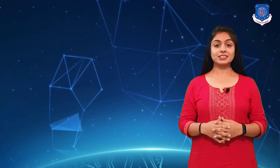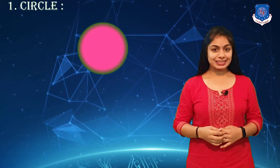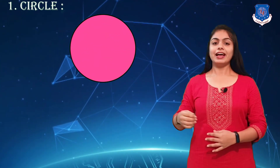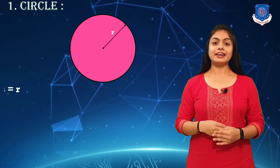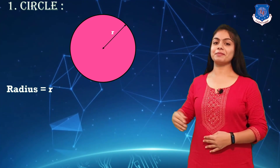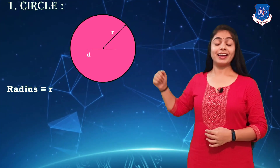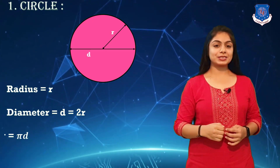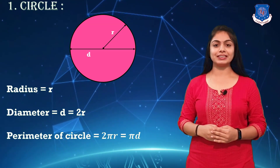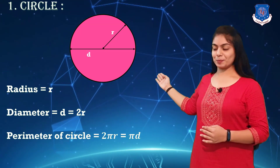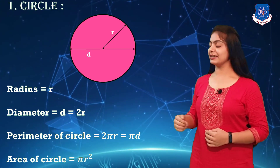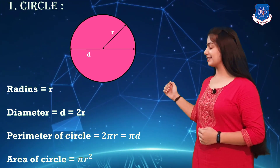Our first plane figure is a circle. You can see in the figure that in a circle, radius is denoted by R and diameter is denoted by D. The perimeter of a circle is 2πr and the area of a circle is πr².